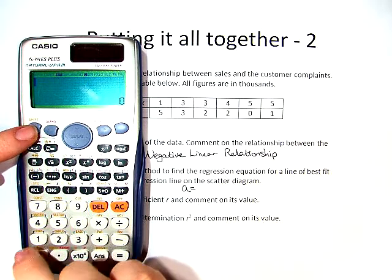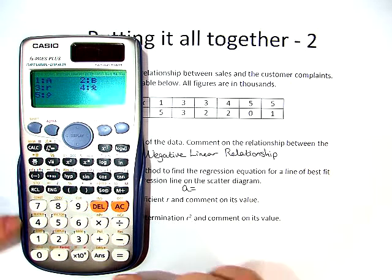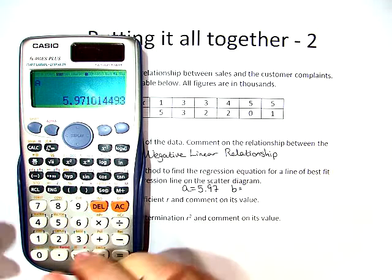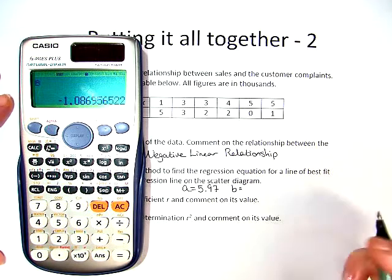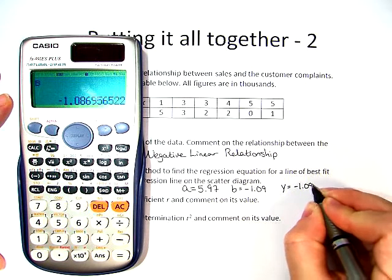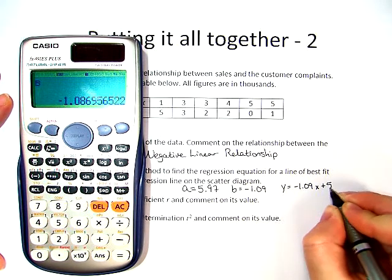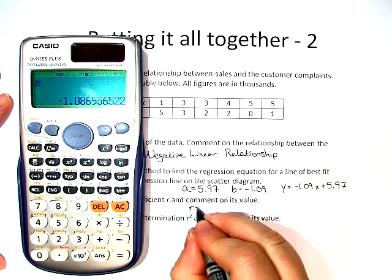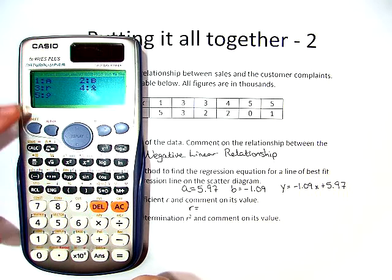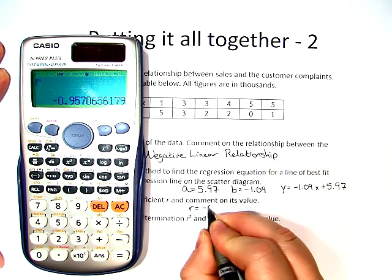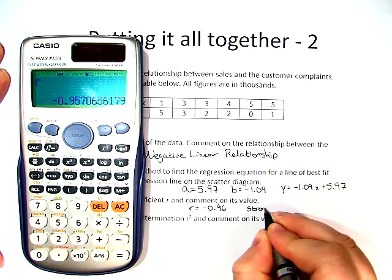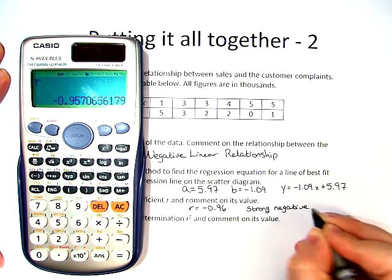We need to start by finding a. So we do shift 1, regression, find a, and we get a is 5.97. Now b, we get is negative 1.09. So the equation is negative 1.09x plus 5.97. Now we need to find r, and to find r we do the exact same steps: shift 1, go to regression number 5, and choose number 3 for r. And we get r is negative 0.96. This means that it is a strong negative correlation.